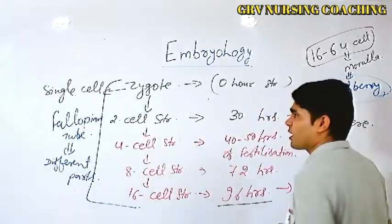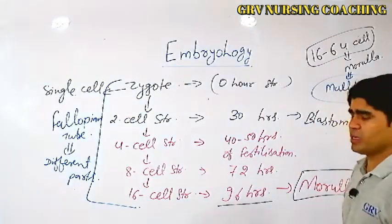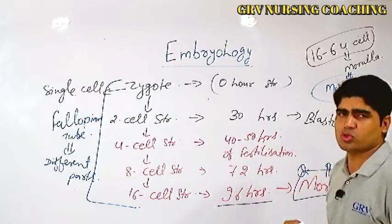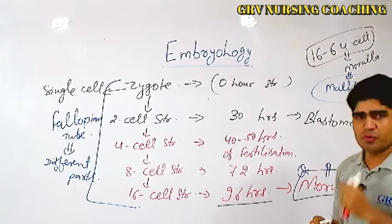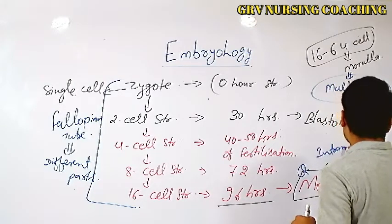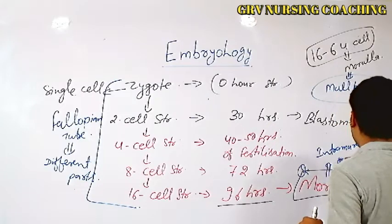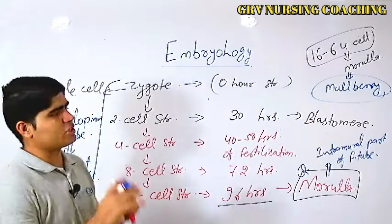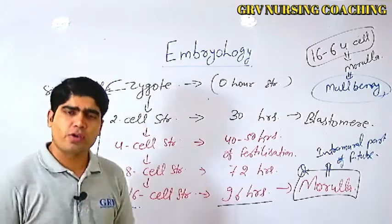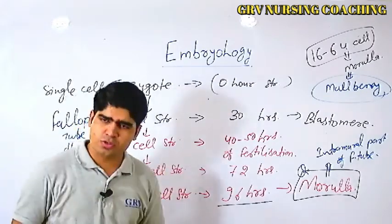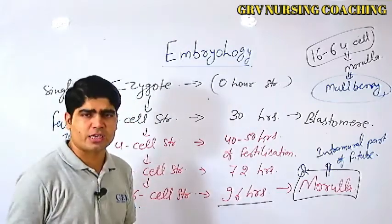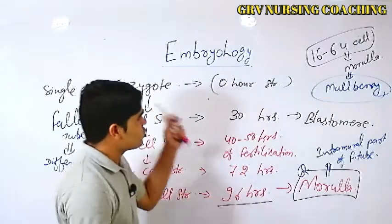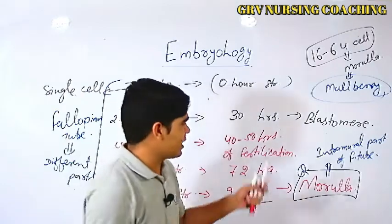An important question: where in the fallopian tube does morula formation occur? The first part of the fallopian tube toward the uterine opening is called the intramural part. The formation of morula takes place in the intramural part of the fallopian tube. Once the cluster of 16 to 64 cells resembling a mulberry fruit is formed, it is pushed toward the uterine cavity.